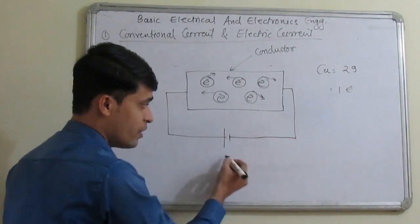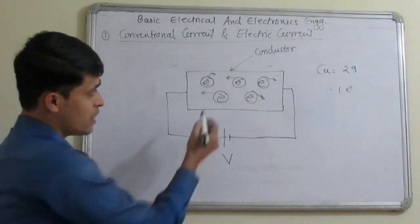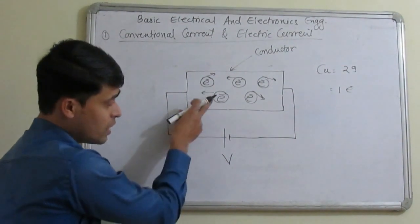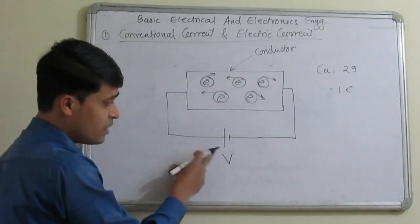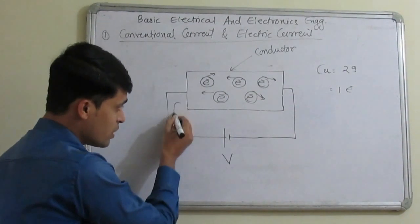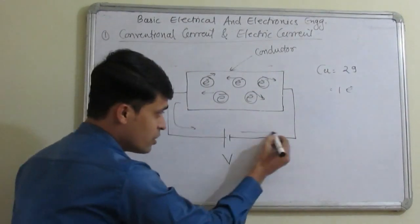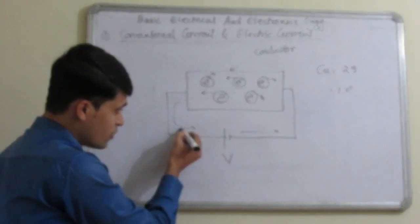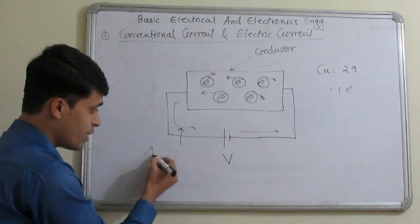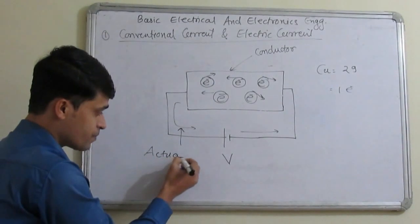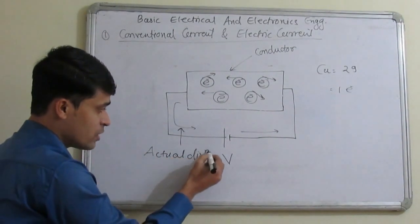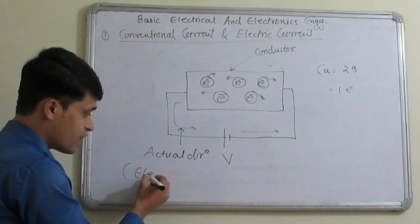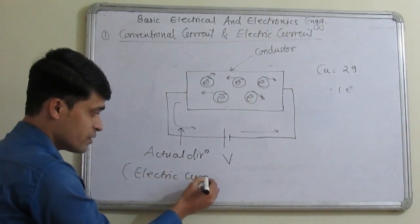When we are connecting one voltage source across the conductor, having the voltage source V, we know that electrons have negative charge. Therefore, these negative charge electrons are attracted towards the positive charge. This is the direction of the electrons, so this direction of the electric current we are calling it as the actual direction of the current, or we are calling it as electric current.